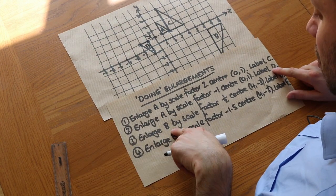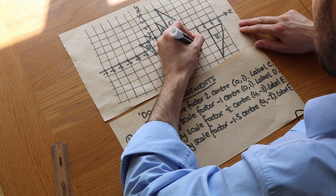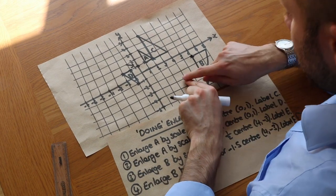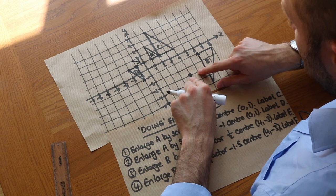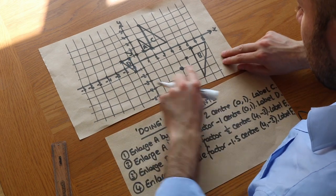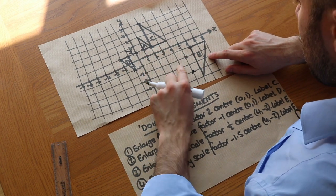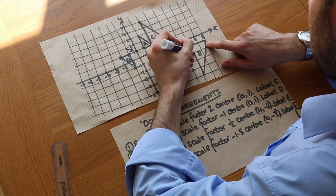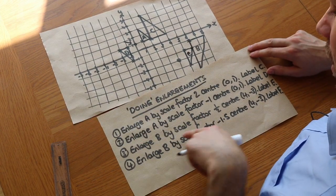Now enlarge shape B by scale factor one half, centre (4,-3). Let's put the centre of enlargement in — (4,-3) is here. Counting from the centre to the first point: it's two right and two up. We times those by one half, giving one right and one up, so that ends up here — it's not flipping because we don't have a negative scale factor. The next point is two right and two down, which becomes one right and one down. The final point is four right and two up, which becomes two right and one up. We get this shape and label it E.